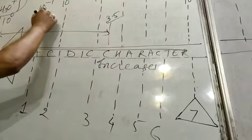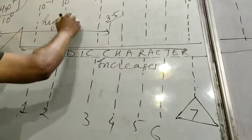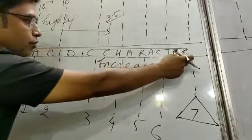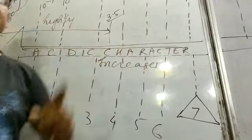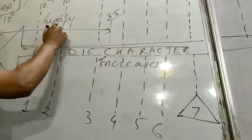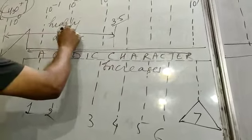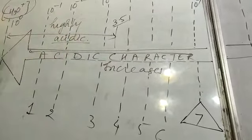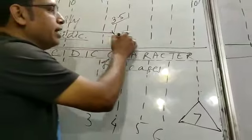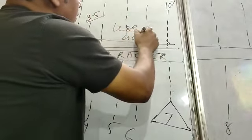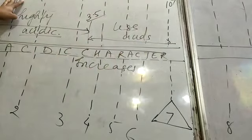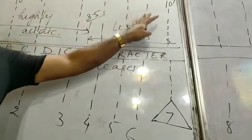And you can see here that as you are moving from this side to this side, the acidic character is increasing. So these are highly acidic in nature, and these are the mild acids or basically less acidic. So here all strong acids and here all weak acids.